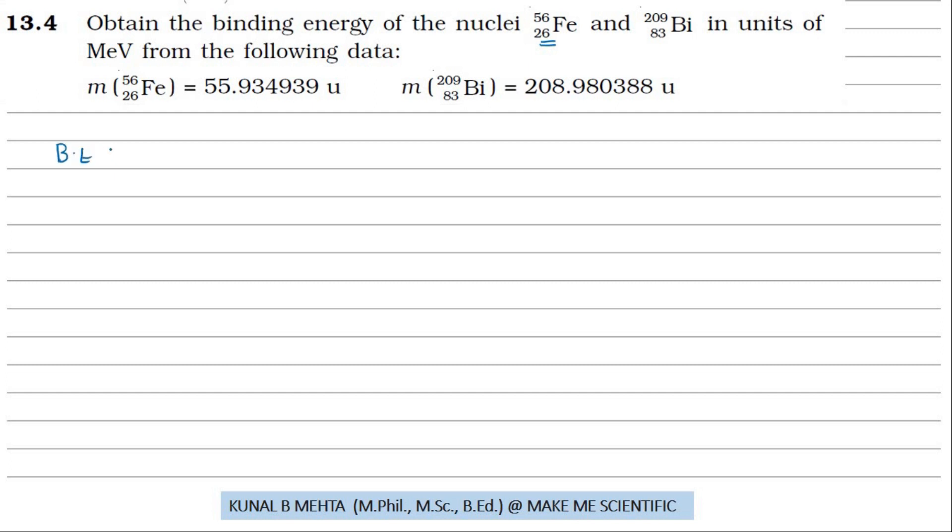We know that binding energy equals Δm times c², where Δm is the mass defect. Δm is the theoretical mass minus the experimental mass, which we calculate from the mass spectrometer. Theoretical mass is the sum of masses of protons and neutrons.